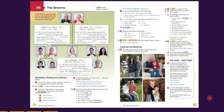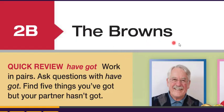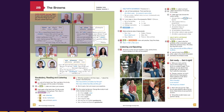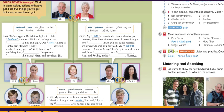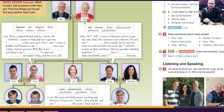Hello everyone. In this lesson today we'll study unit 2A. The Browns is the family name. This is the family — how many members in the family? How many people? We have two, three, four, five, six, seven, eight, nine and ten. We have ten people in this family.